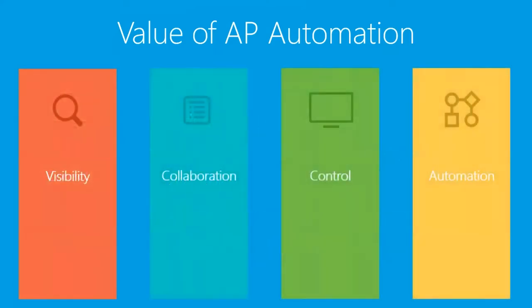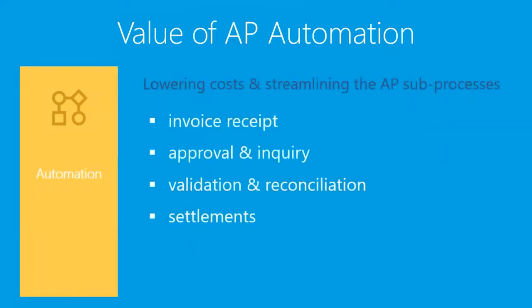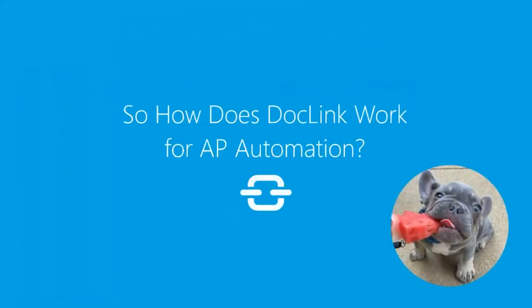Last to round off our value topic is automation. Lowering cost and streamlining the AP subprocess is a big one — from invoice receipt, approval and inquiry, validation, reconciliations, maybe three-way matching, and settlements. The idea is there's a ton of value in AP automation, and that's why we start there.